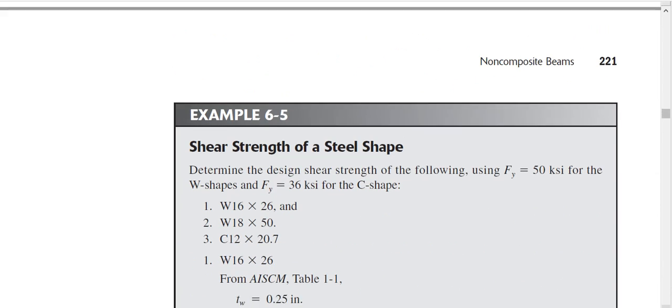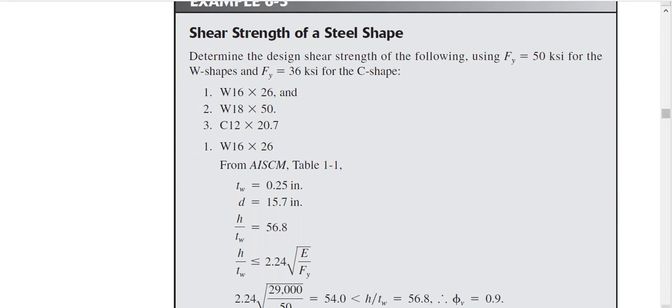In your book, there are some examples. These examples will clarify your knowledge. Here, what is it? Determine the design shear strength of the following sections, using FY 50 KSI for W shape, and FY 36 KSI for C shape. So two types of sections, W and C. W is this one, and C is this one, C means channel section.